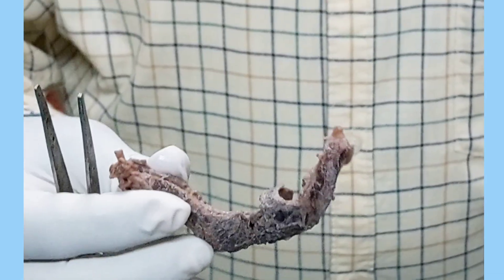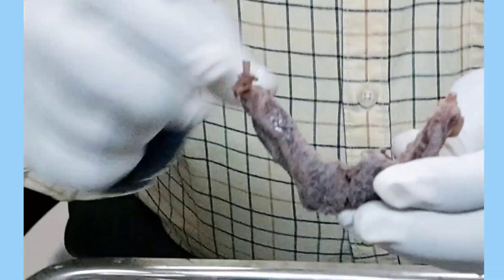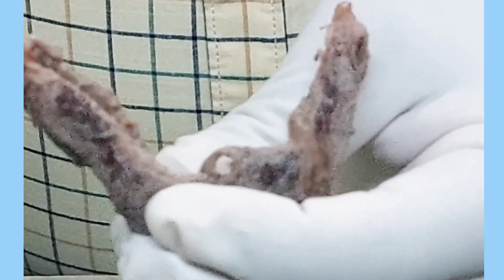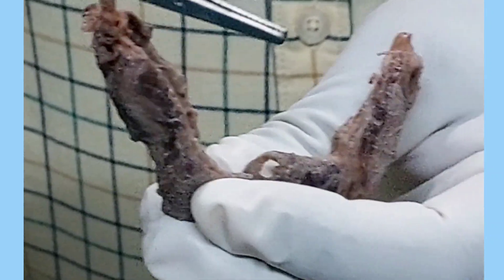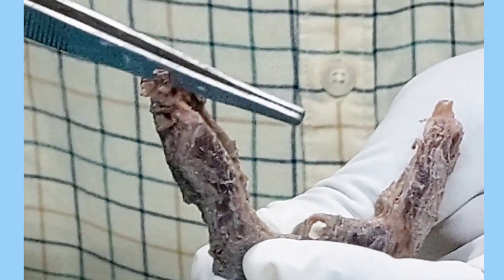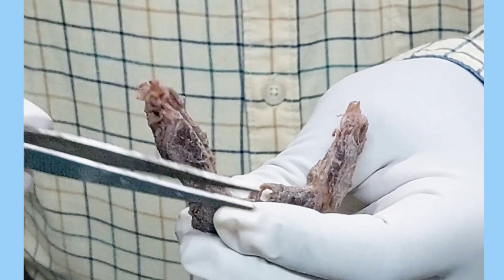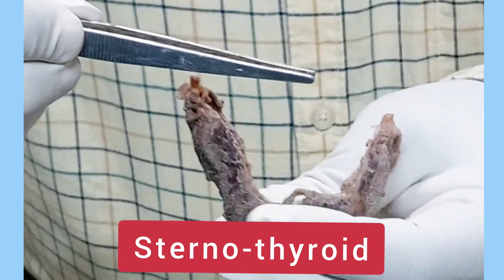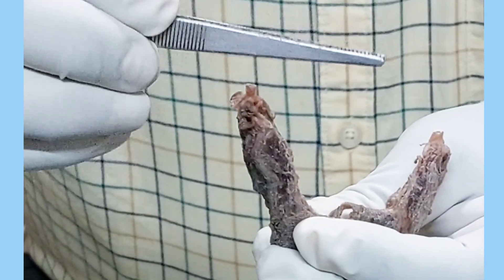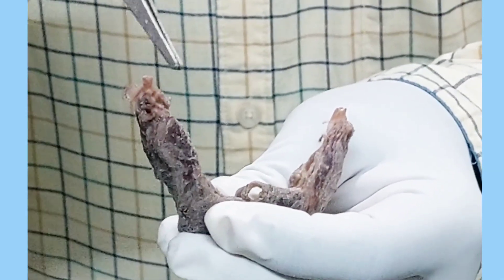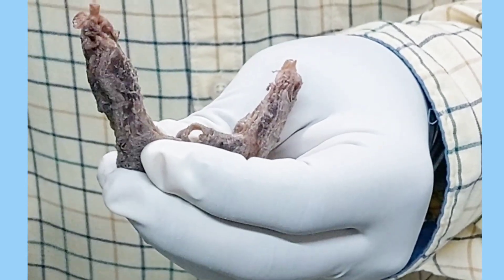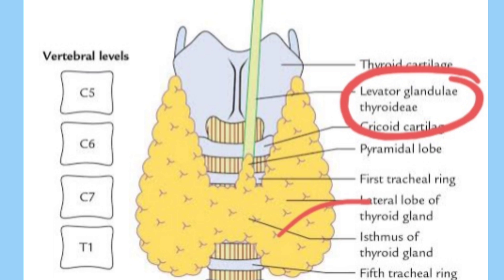Now I have to hold the thyroid in anatomical position. The apex is not only directed upwards, it is also placed obliquely, going upwards and laterally up to the oblique line of the thyroid cartilage. The thyroid gland cannot extend above the oblique line of the thyroid cartilage because anteriorly there is a muscle called the sternothyroid muscle, which prevents upward displacement due to its attachment on the oblique line. Medially, there is also a muscle called the inferior constrictor. So the apex is sandwiched between the inferior constrictor and the sternothyroid muscle, which is why it cannot move above the oblique line.